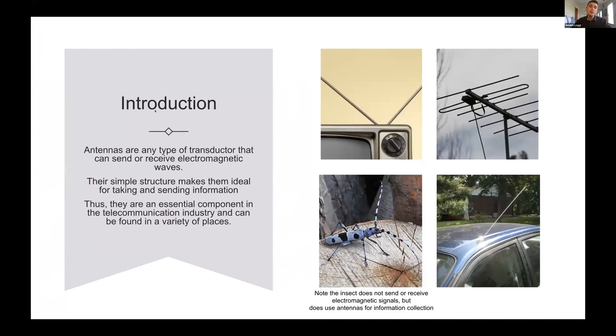Starting with the introduction, antennas, terminals, and aerials are all types of transducers that can send or receive electromagnetic waves. They're very simple in structure or they can be very complex and are common in the telecommunications industry.